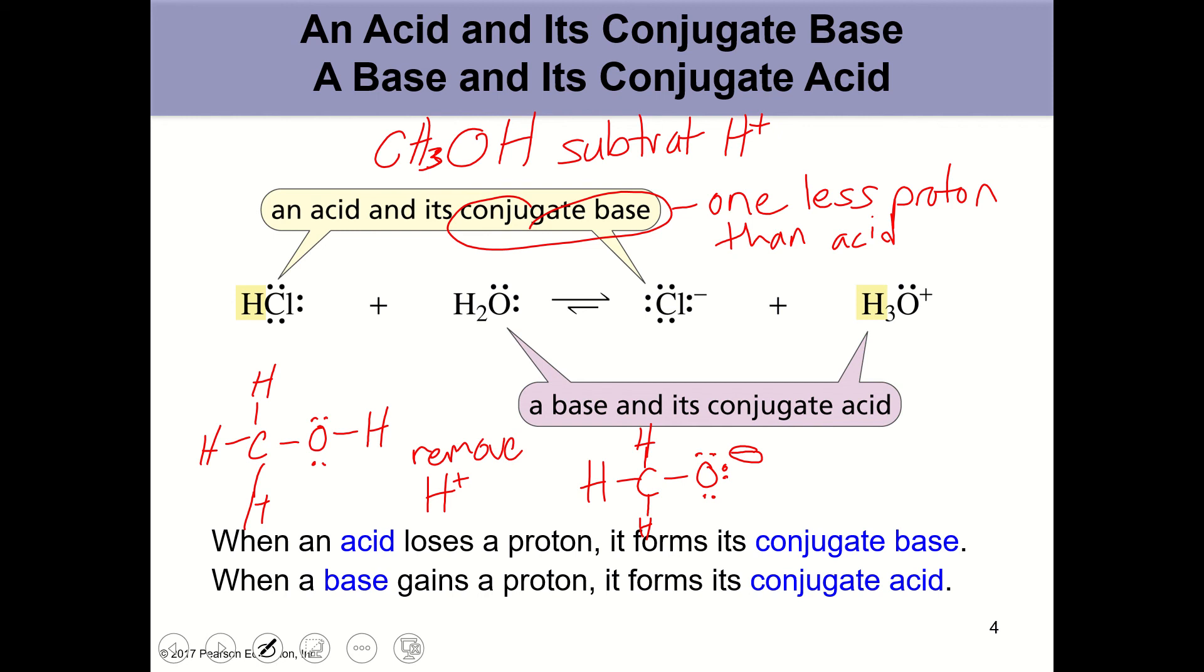And so this would be the conjugate acid, the alcohol. It has one more proton than the conjugate base by molecular formula. It should also have one more negative charge. So the conjugate base should have a difference in charge from the acid. And the base should be more negative than the acid.